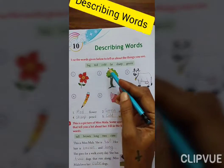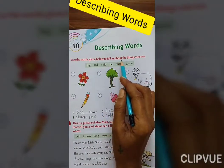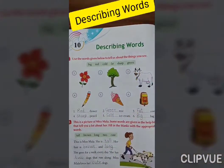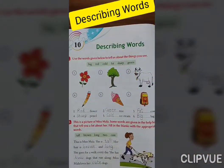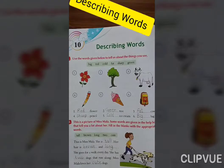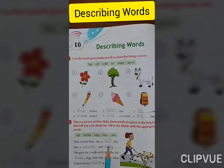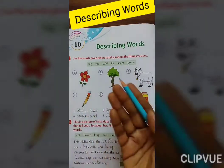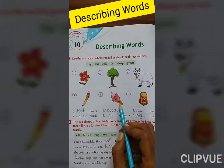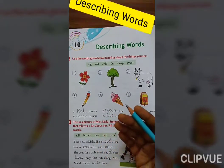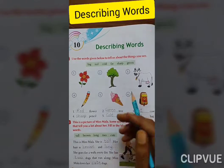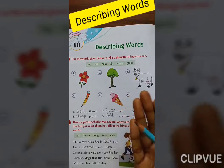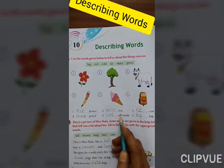Use the words given below to tell us about the things you see. यहाँ पे six picture है और six picture के बारे में हमें box में words दिये है. तो हमें यहाँ से find करने हैं — यह picture देखकर, उसका shape देखकर, उसका color देखकर, और जैसे feel हम कैसा करते हैं. जैसे कि ice cream है, तो जब हम ice cream खाते हैं, तो कैसा feel करते हैं? Hot या cold? वो सब हमें यहाँ पे लिखना हैं.